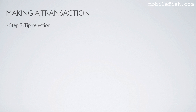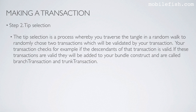Step 2: Tip selection. The tip selection is a process whereby you traverse the tangle in a random walk to randomly choose two transactions which will be validated by your transaction. Your transaction checks, for example, if the descendants of that transaction are valid. If these transactions are valid, they will be added to your bundle construct and they are called branch transaction and trunk transaction.